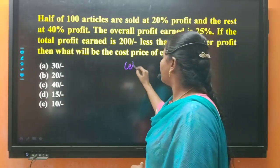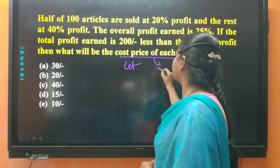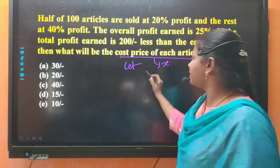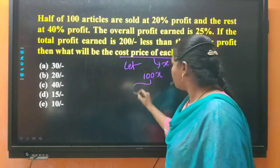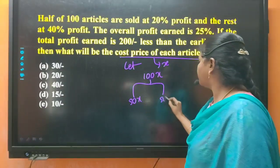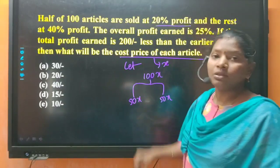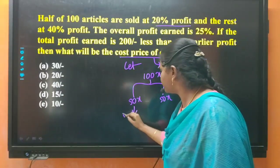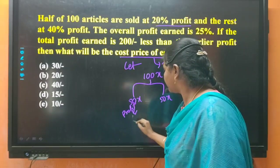Let the cost price of each article be x. With 100 articles, the total cost is 100x. Out of these, half — 50x — is sold at 20% profit, so the profit from that half is 10x.